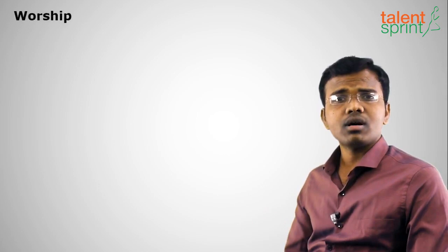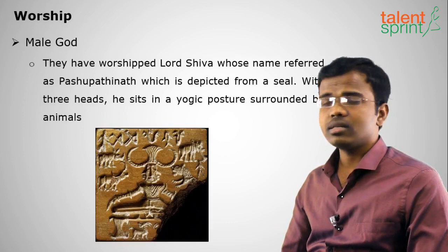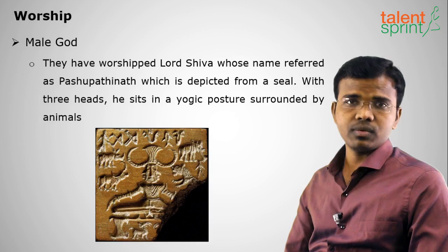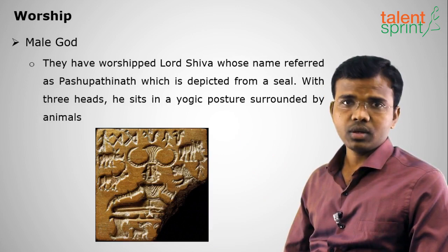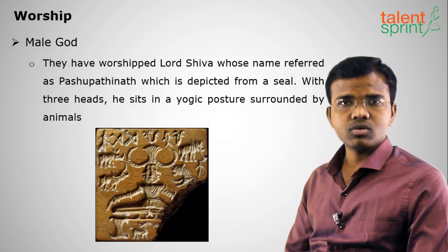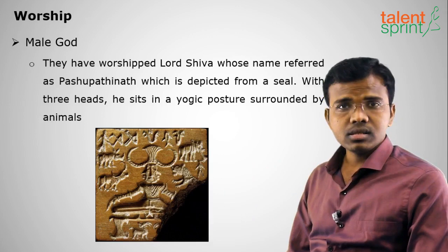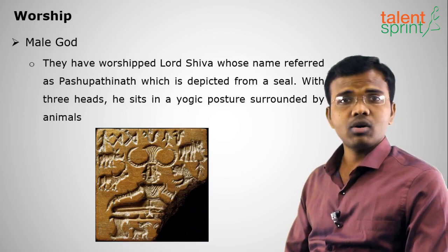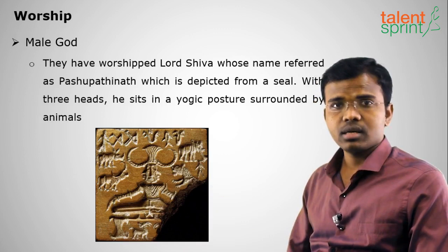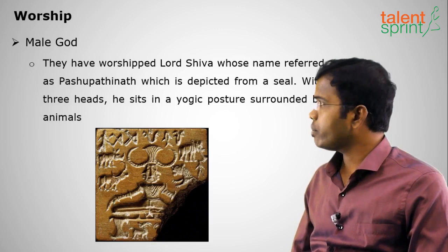Now we look at worship. The first is the male god: they worshipped an incarnation of Lord Shiva and called him Pashpatinath Mahadeva. This is depicted on a famous seal — engraved on stone — showing Pashpatinath Mahadeva sitting in a yogic posture with three horn heads, surrounded by various animals.